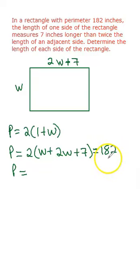So we already know the perimeter is 182 and we know the length and width. So first thing I would do on each side I would divide by 2, so it gives me w plus 2w plus 7 equals 91.